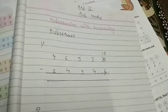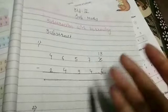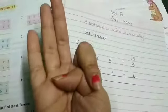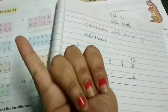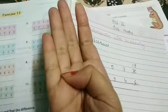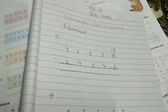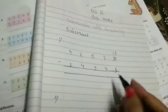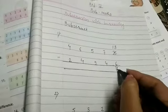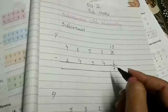13 minus 6. So, we start with 6 and count up to 13: 7, 8, 9, 10, 11, 12, 13. कितना आया है? 7. 13 minus 6 equals 7.